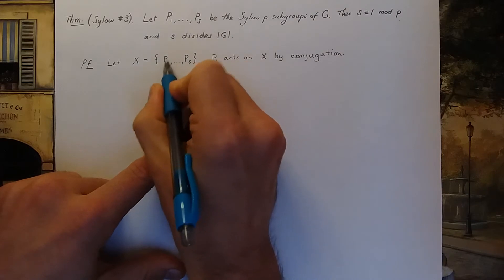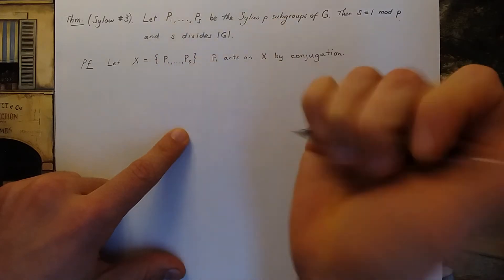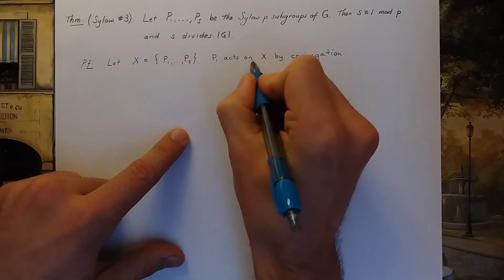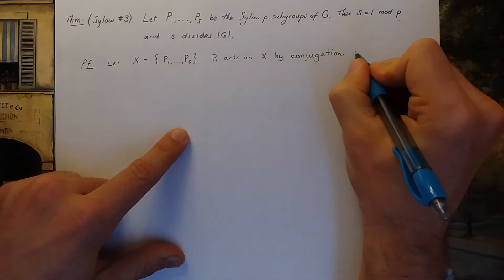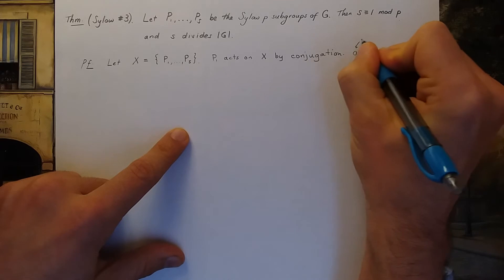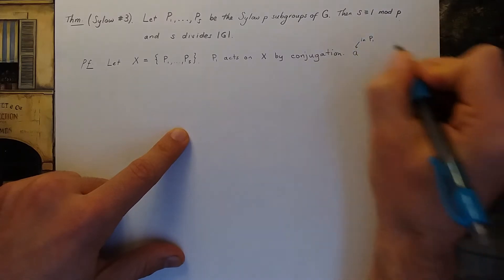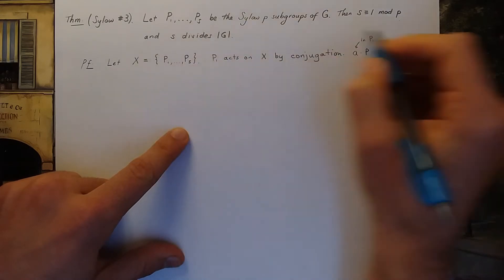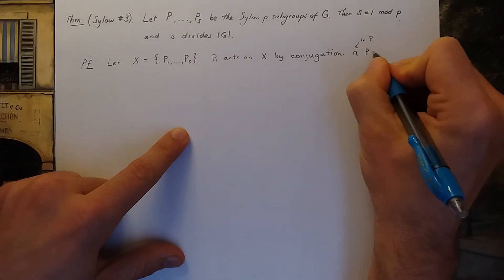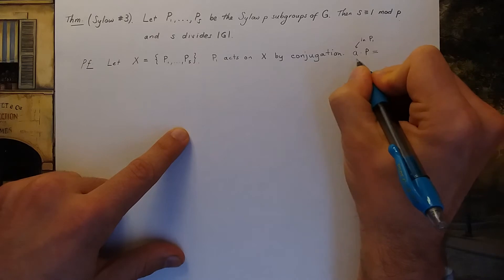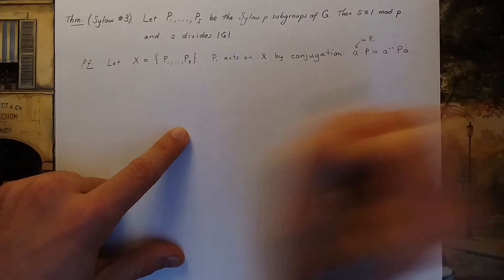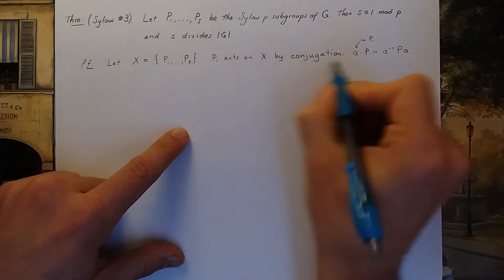P₁ is the first CELO p-subgroup that I wrote down here. When I say P₁ acts on X by conjugation, I mean that if you take an element a in P₁ and you take any other set P in X, I define the group action to be a⁻¹Pa. So that's the group action.